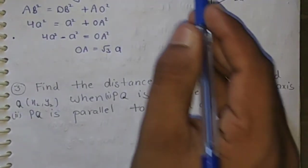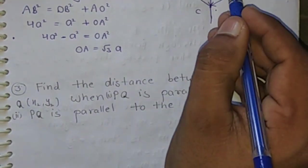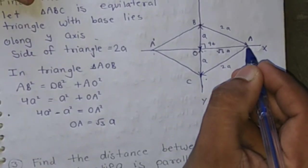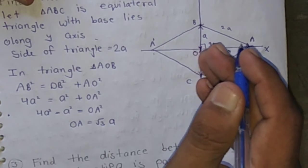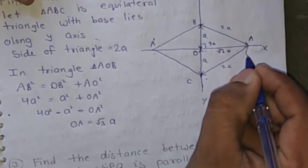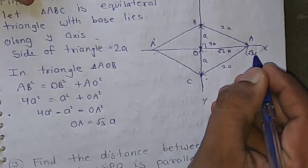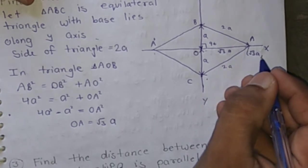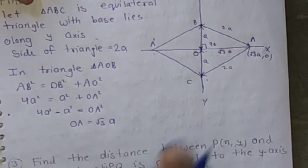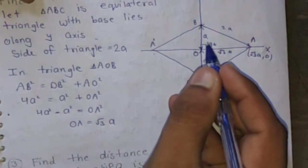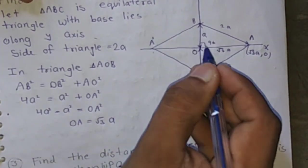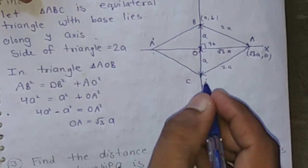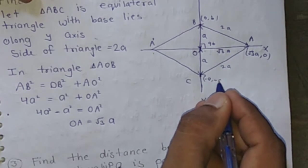Since AO is root 3a, then coordinate of point A is, we move root 3a distance on x-axis. Then point A lies on x-axis at (root 3a, 0). We move a distance on y-axis. Then point B is (0, a). Similarly, this point is (0, minus a).